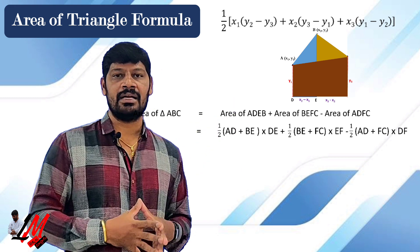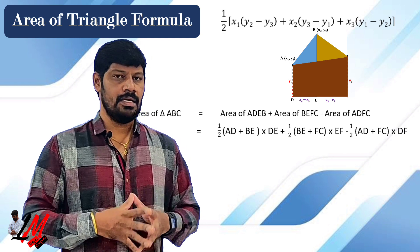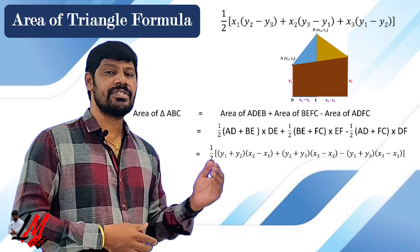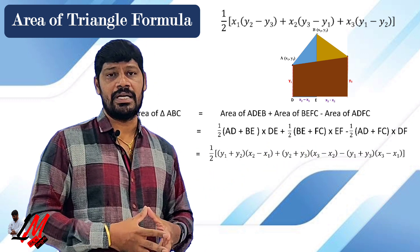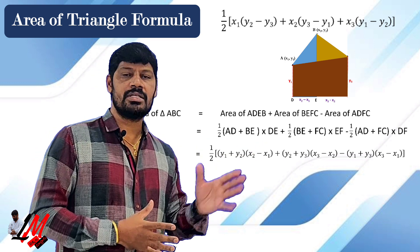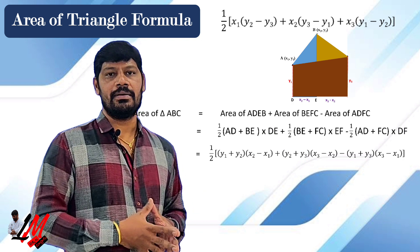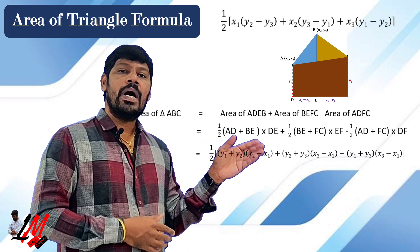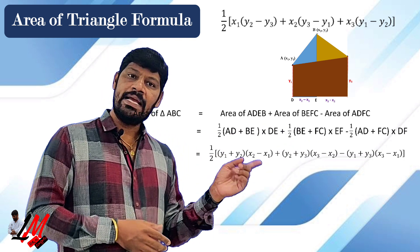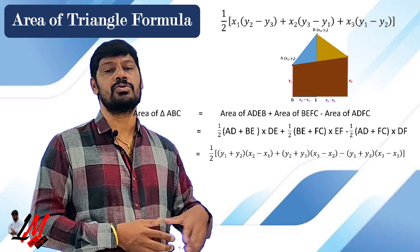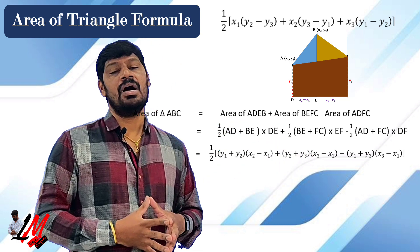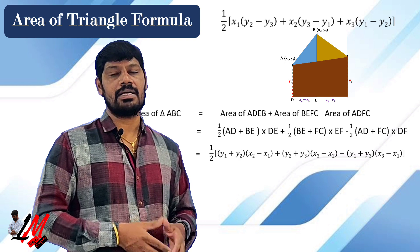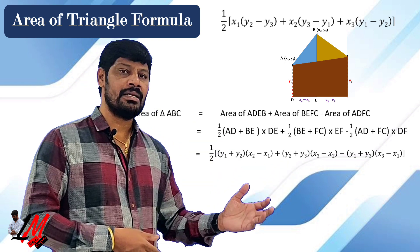DF is equal to x3 minus x1. Since every part has a factor of half, we take half as a common factor. Substituting all the values: half of [(y1 plus y2)(x2 minus x1) plus (y2 plus y3)(x3 minus x2) minus (y1 plus y3)(x3 minus x1)]. Here y1 and y2 are the parallel sides of the first trapezium, x2 minus x1 is its height; y2 plus y3 are the parallel sides and x3 minus x2 is the height of the second; y1 and y3 are the parallel sides and x3 minus x1 is the height of the third.